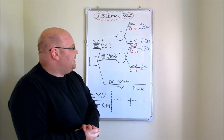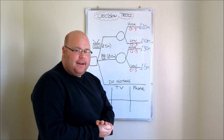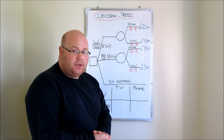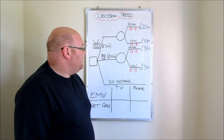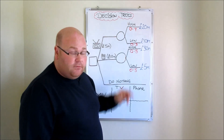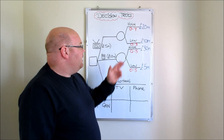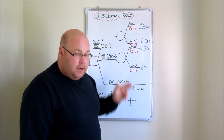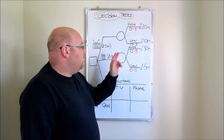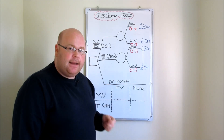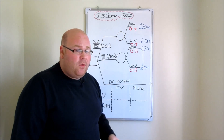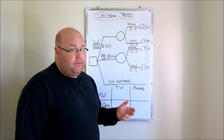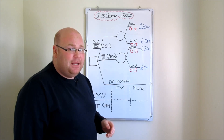At the end of the branches we can see how much revenue each possible outcome might generate. If the TV launch results in high sales it will make the business 20 million pounds, but if it results in low sales it will only make 10 million pounds. So there's a 0.7 probability — a 70% chance — it makes 20 million pounds, and a 0.3 probability it only makes 10 million pounds.